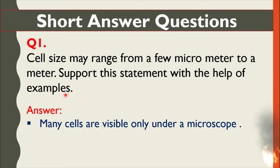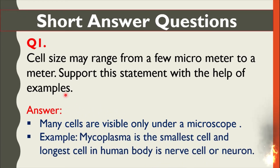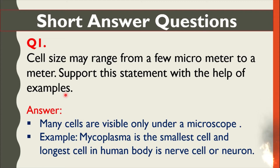As many cells are visible only under a microscope. Mycoplasma is the smallest cell — it is very minute. And the longest cell in the human body is the nerve cell, or neuron. You have to remember: mycoplasma is the smallest cell, and the longest cell is in the human body and it is called the nerve cell.